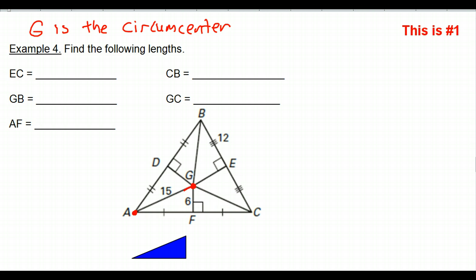That means from the circumcenter to each vertex, each corner of the triangle should be the same length. So if this is the circumcenter — and we've just decided that it is — then it should be equally distant to the vertices. The distance from G to A should be the same as the distance from G to B. It should be the same as the distance from G to C. So all three red lines should be equal. That means GC is 15, since AG is 15. So BG is also 15.